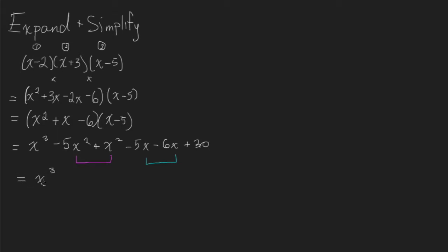And so what we're going to do is we're going to add all those up nicely, combining our like terms. So we have x to the power of 3, we have negative 4x squared, and then we have negative 11x, and we have 30 on the end. And that's as simple as we can get.